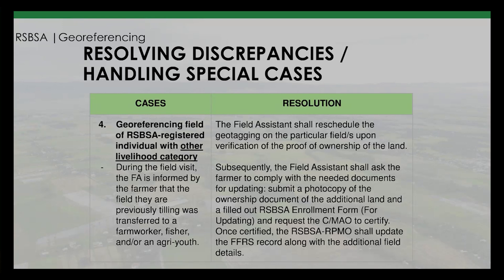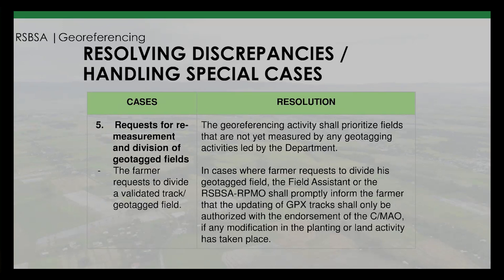Subsequently, the field assistant shall ask the farmer to comply with the needed documents for updating — submit a photocopy of the ownership document of the additional land and a filled-out RSBSA enrollment form for updating — and request the C/MAO to certify. Once certified, the RSBSA RPMO shall update the FFRS record along with the additional field details.